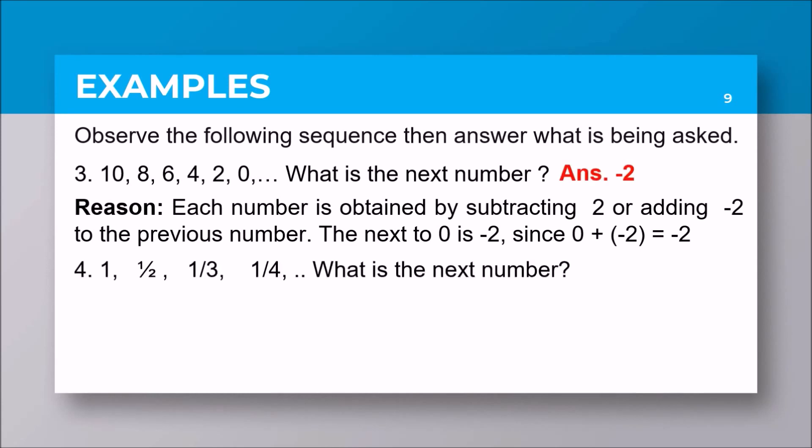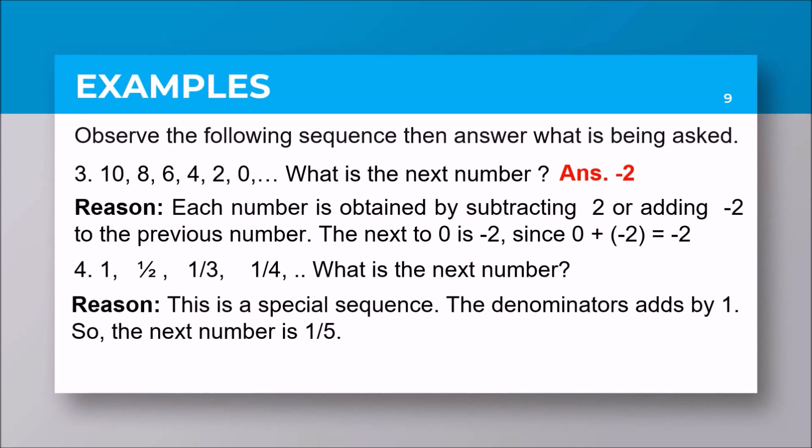For the fourth item: 1, one half, one third, one fourth. What is the next number? This is a special sequence because we are adding 1 to the denominators. So therefore, next to one fourth is one fifth.